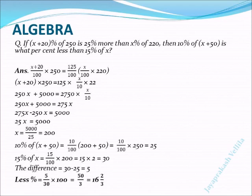The difference is 30 - 25 = 5. What percent less than 15% of x? This less percentage can be calculated as (5/30) × 100 = 50/3. Zeros cancel, so 50/3 = 16⅔.